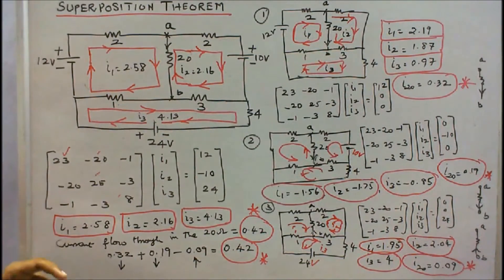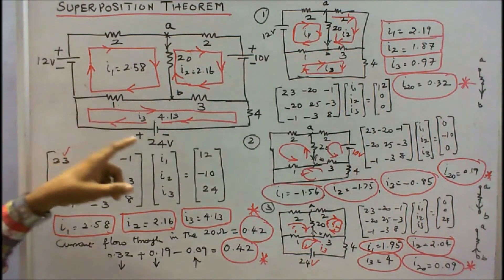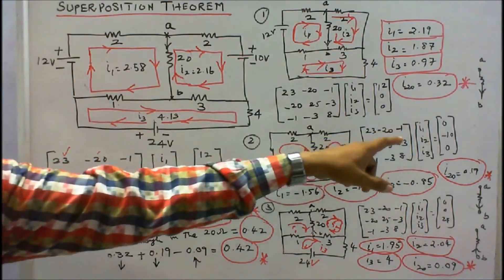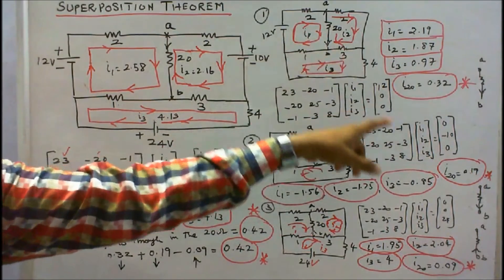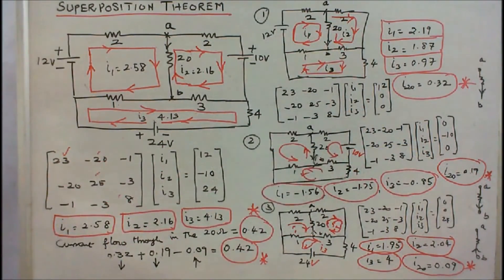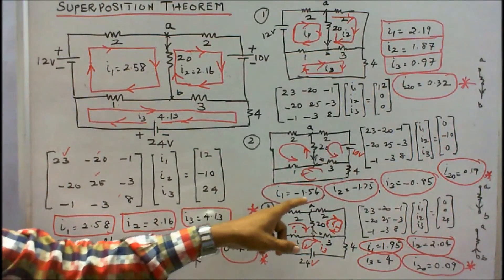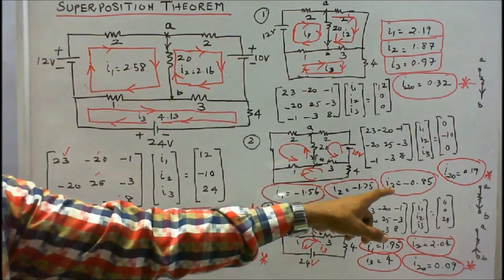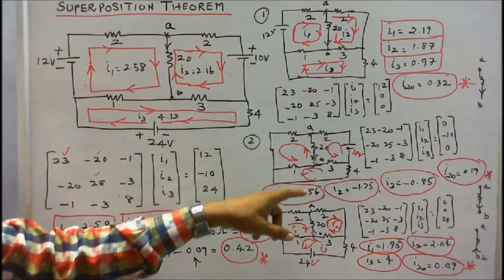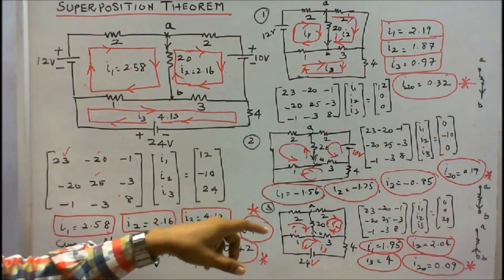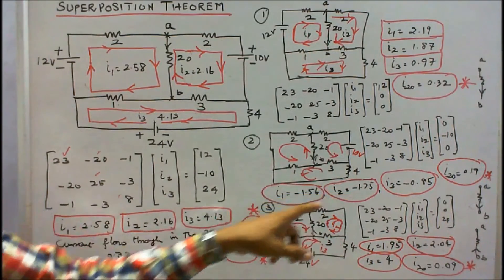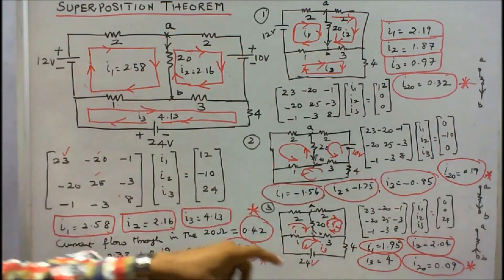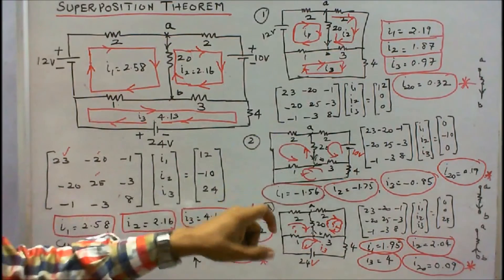In the second step, I activate the 10V source and deactivate 24V and 12V. Therefore V1 = 0, V3 = 0, and V2 = −10V. Solving the equations gives I1 = −1.56, I2 = −1.75, I3 = −0.85. The current through the 20-ohm resistor is I2 − I1 = 1.75 − 1.56 = 0.19 A, again directed toward point B.